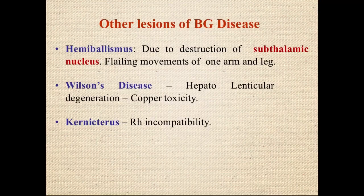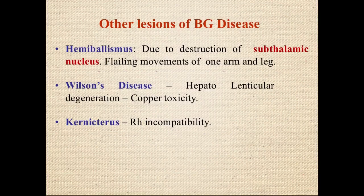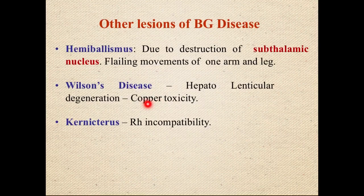Hemiballismus is easy to localize: 'hemi' means half, and it results from a lesion in the subthalamic nucleus. It presents as flailing, flinging movements of the arm or leg on the contralateral side — if the left subthalamic nucleus is affected, hemiballistic movements occur on the right side. Wilson's disease is due to copper toxicity from a hereditary disorder in which copper is not properly excreted and accumulates in tissues.